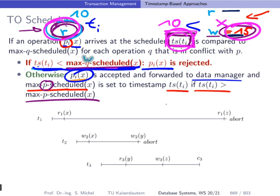In case we have a write operation, writes are problematic with both reads and writes. So we have to compare the timestamp of TI to both max R scheduled and max W scheduled — both the read and the write timestamps stored for object X.